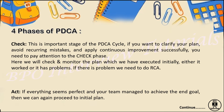The next phase is Check — this is the most important stage of PDCA. If you want to clarify your plan, avoid recurring mistakes, and apply continuous improvement successfully, you need to pay close attention to the Check phase. Here we check and monitor the plan we initially executed — whether everything is working or if there are problems. If there is a problem, we need to do an RCA. I have already added RCA videos with examples in my playlist.